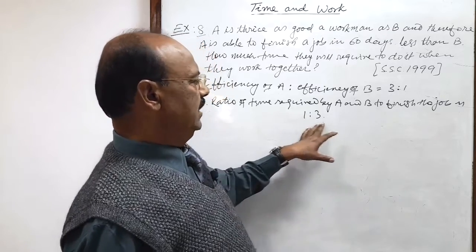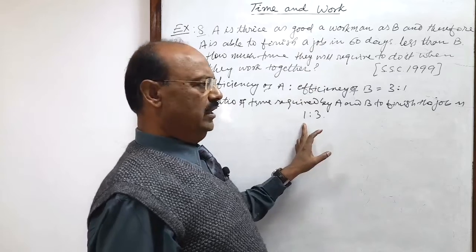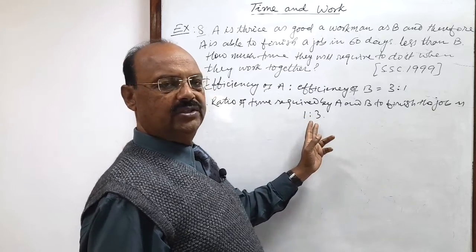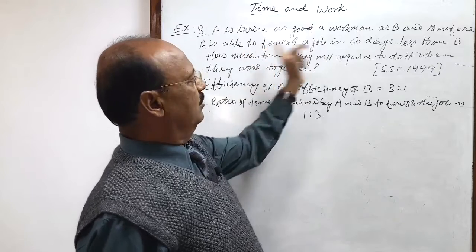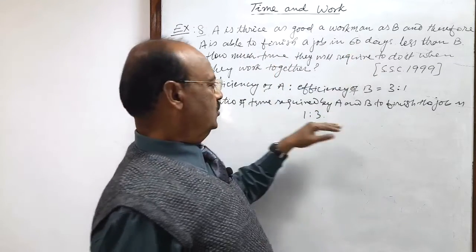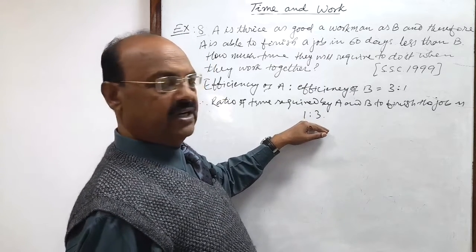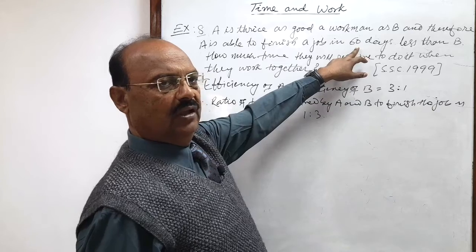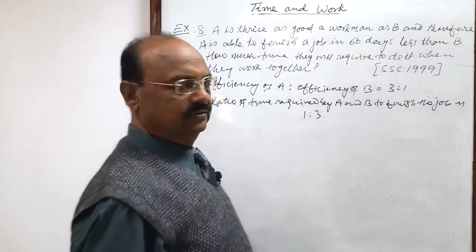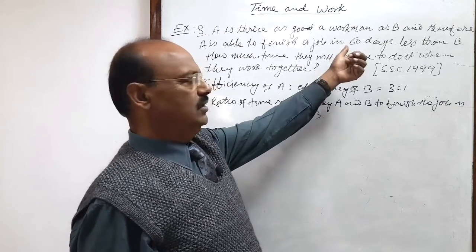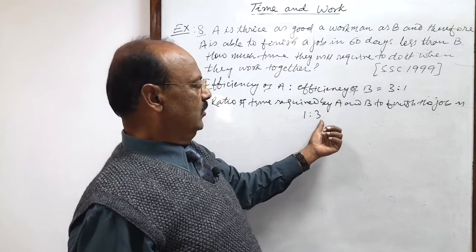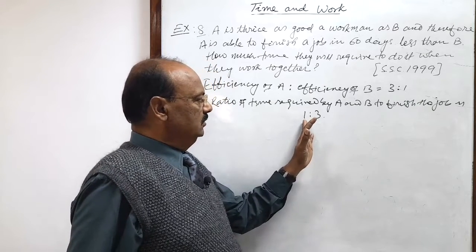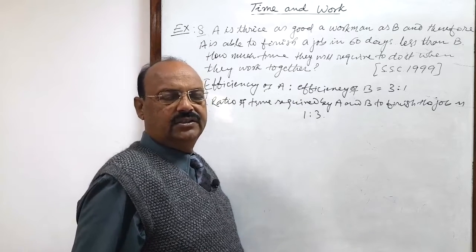And what is the difference? Suppose A is taking one day, B is taking three days, then the difference between number of days is two days. But here given that the difference in number of days is 60. So if difference is two, number of days required by A is one and required by B is three. And if difference is 60 days, then required by A will be one third of 60, which means 30 days, and required by B is three times the number of days required by A, that is 90 days.